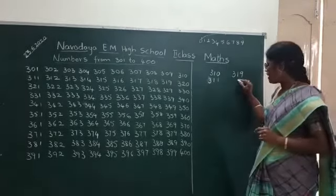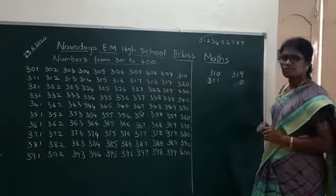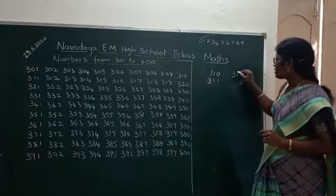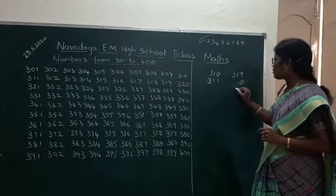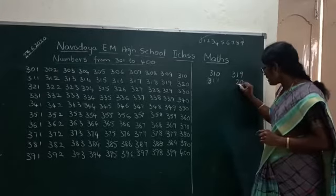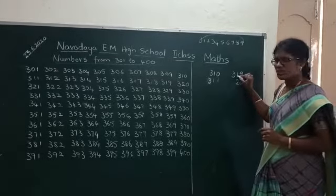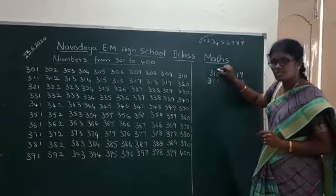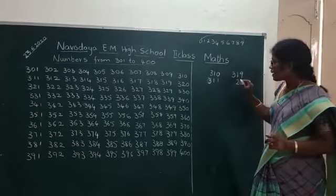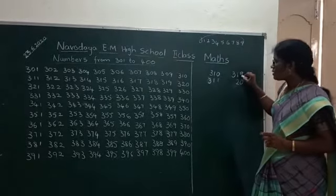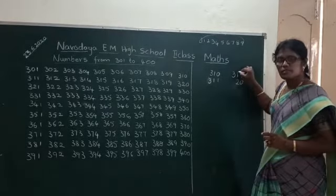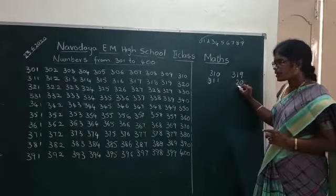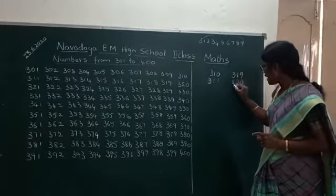In the place of 9, we write 0. The place before — the before place — will change to the next number automatically, compulsory. If 0 is in this place, this place does not change. But if 9 is there, the place before changes to the next number. 1 after 2 — so the 3rd place stays as this.